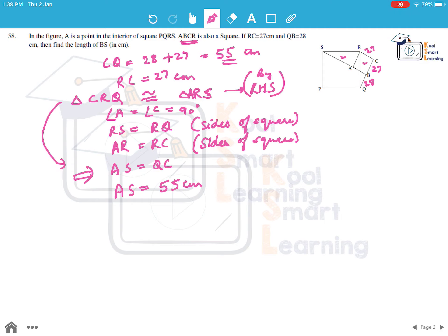Now we have to find out BS, which is nothing but AS plus AB. And AB we know is the side of the square, which is 27. So AS is 55, so this becomes 55 plus 27, which is 82 cm. So BS is equal to 82 cm.